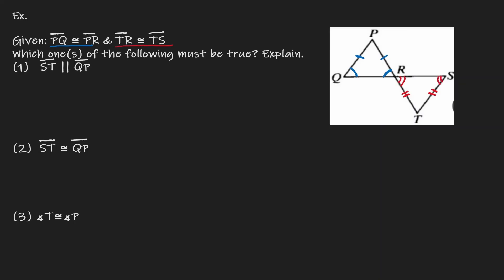That's all the information that we know within this diagram. Now, we want to see if the following statements are true. Let's start with the first statement: Is it true that ST and QP are parallel to each other? We want to see if ST, which we have here on the bottom, is parallel to QP, which we have here. If those two sides are said to be parallel to each other, we have to show that we have congruent angles, either in the form of corresponding, alternate interior, or alternate exterior angles. Let's consider this line to be some kind of a transversal.